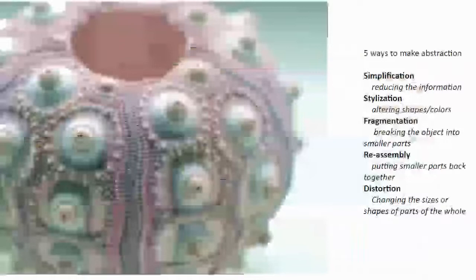First is simplification — reducing the information in an object. We saw that on the first image, where the painting of the tree didn't have every leaf or every branch, but had the simple implication. It made it look like a tree, even though it was missing some of those details.